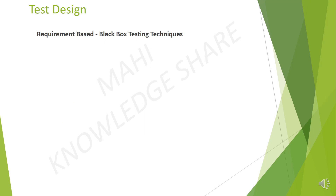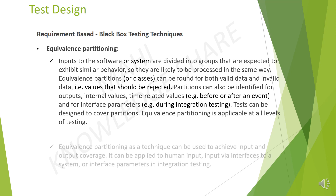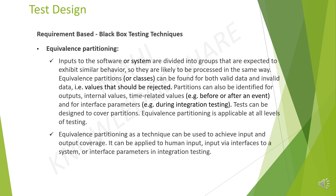What is equivalence partitioning? Inputs to the software are divided into groups that are expected to exhibit similar behavior, so that they are likely to be processed in the same way. Equivalence partitioning can be found for both valid data and invalid data. Partitions can also be identified for outputs, internal values, time-related values, and for interface parameters. Tests can be designed to cover partitions. Equivalence partitioning is applicable at all levels of testing and can be used to achieve input and output coverage. It can be applied to human input, input via interfaces to a system, or interface parameters in integration testing.